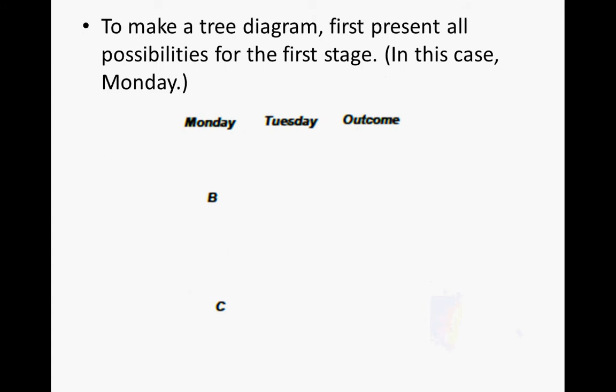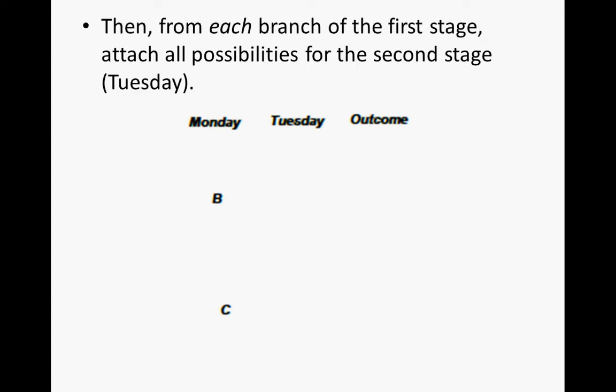To make a tree diagram, first present all possibilities for the first stage. In this case, the first stage is Monday — you can either play a board game or a card game. Then from each branch of the first stage, we attach all possibilities for the second stage, which would be Tuesday. On Tuesday, the possibilities are again to play a board game or a card game.